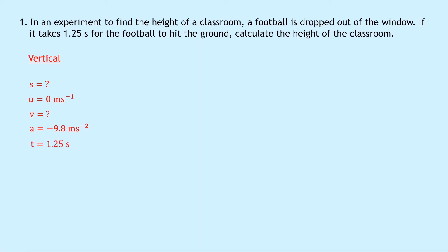And lastly, the time is 1.25 seconds, which we're told in the question. We can then put a star next to the s because that's the one we're trying to find. And therefore we want to choose the equation of motion which does not have v in it. So we're going to use s equals ut plus a half a t squared.